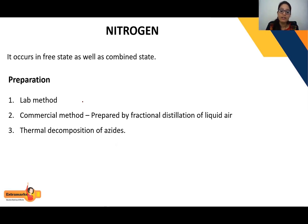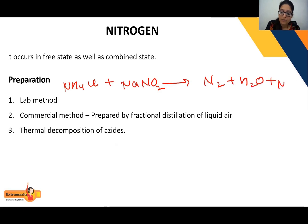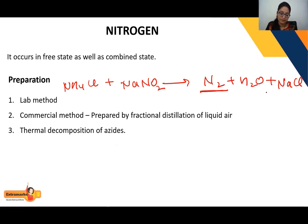In the lab method, you can extract nitrogen by reacting ammonium chloride (NH₄Cl) with sodium nitrite (NaNO₂). The products are N₂, H₂O, and NaCl. So when ammonium chloride reacts with sodium nitrite, you obtain nitrogen gas (N₂), water, and sodium chloride.